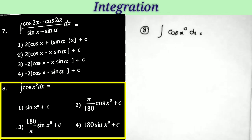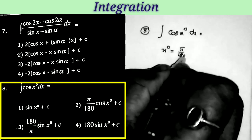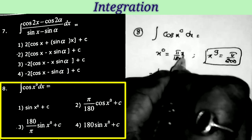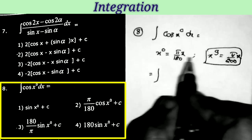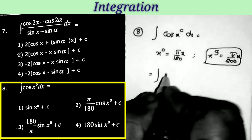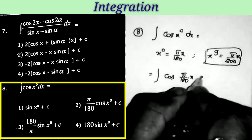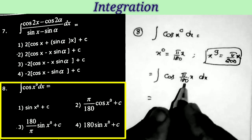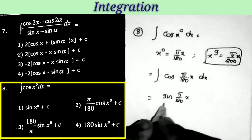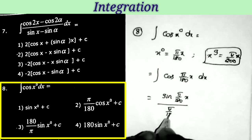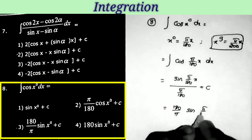Next question: integral of cos(x°) dx. As discussed in the limits and continuity chapter, x degrees = π/180 · x. So the integral becomes ∫cos(π/180 · x) dx. This is in the form ∫cos(ax) dx = sin(ax)/a. So the answer is sin(π/180 · x) / (π/180) = 180/π · sin(π/180 · x) + c, which is the third option.